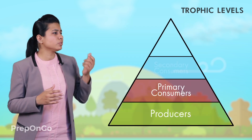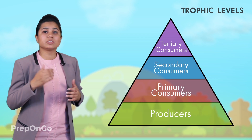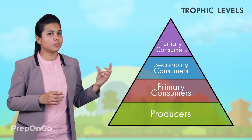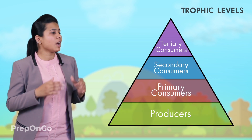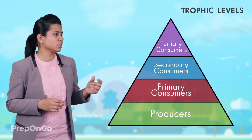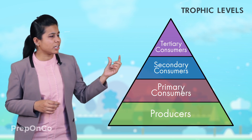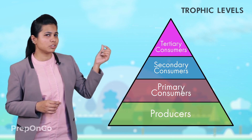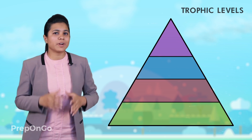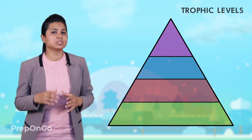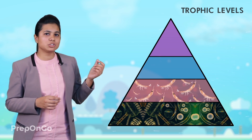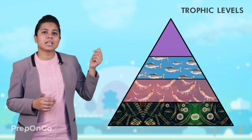Here you can see the number pyramid. Since the number of producers is most, at the lowest level will be the producers. Then after the producers are the herbivores or primary consumers, followed by the secondary consumers and then the tertiary consumers. In the case of the pond ecosystem, the phytoplanktons are the producers, so they will be placed at the lowest level, followed by the zooplanktons, fishes, and birds.